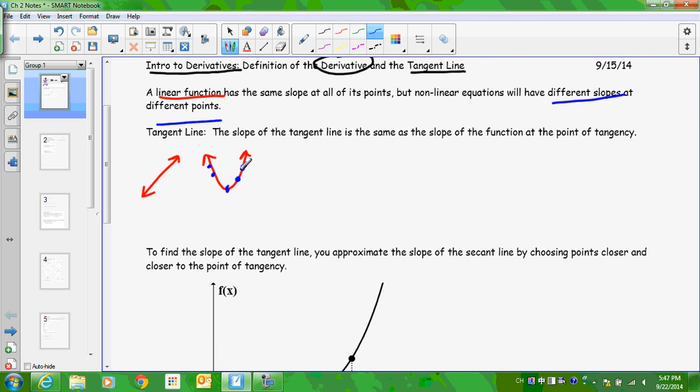All right, however, at any given point, we can say that there is a tangent line, and the slope of that tangent line, we can say is the slope of the function at that point of tangency.